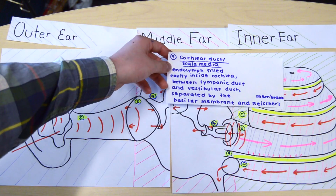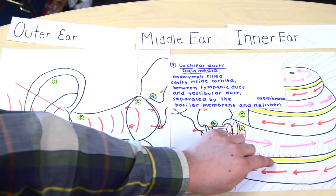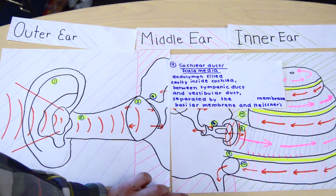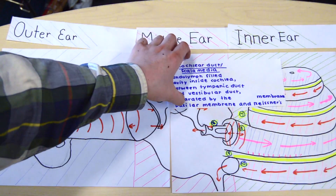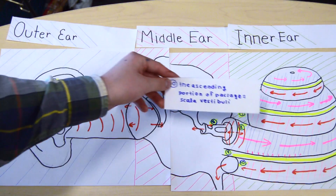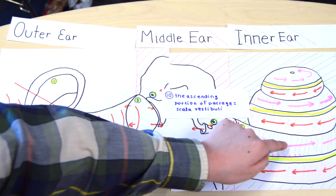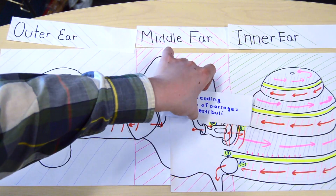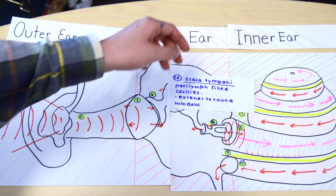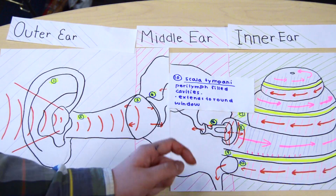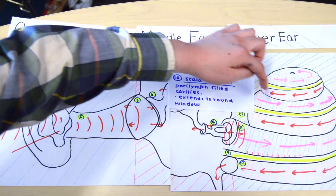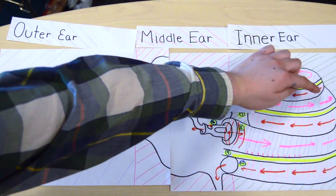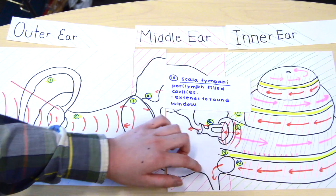The cochlear duct, or scala media, is the endolymph-filled highlighted cavity inside the cochlea between the tympanic duct and vestibular duct, separated by the basilar membrane and Reissner's membrane. The ascending portion of the passage is the scala vestibuli, in which sound transmitted from the oval window travels up the cochlea. The scala tympani is the descending portion of the cochlea in which the sound vibrations travel down the cochlea, shown with the orange arrows. It is a perilymph-filled cavity and extends all the way to the round window, where the sound vibrations exit the cochlea.